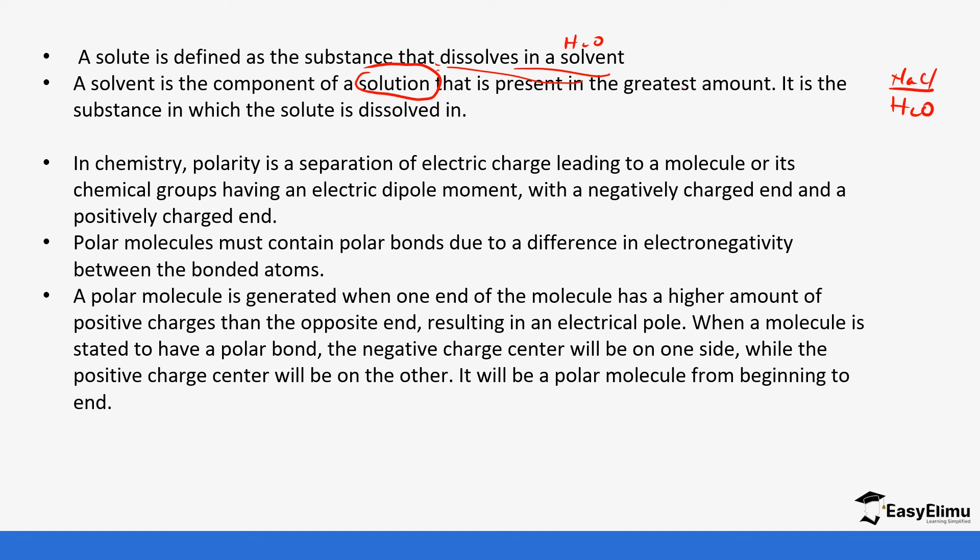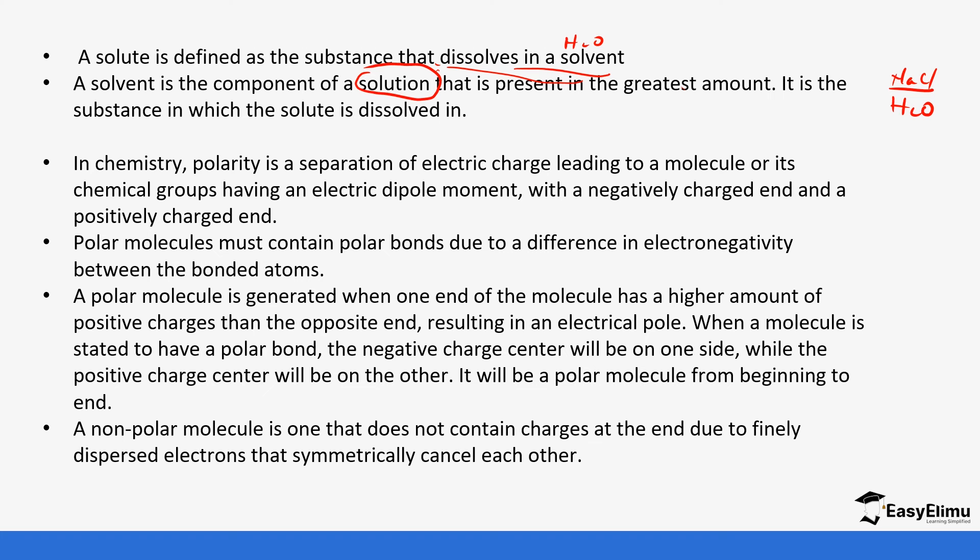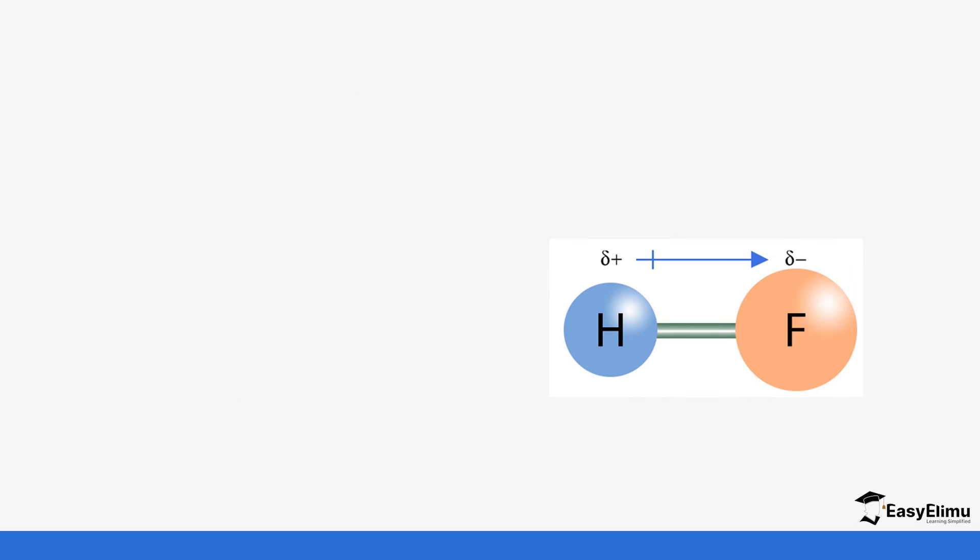Polar molecules must contain polar bonds due to a difference in electronegativity between the bonded atoms. A polar molecule is generated when one end has a higher amount of positive charge and the opposite end has negative charge. Non-polar molecules do not contain charges at the end due to evenly dispersed electrons that symmetrically cancel each other.